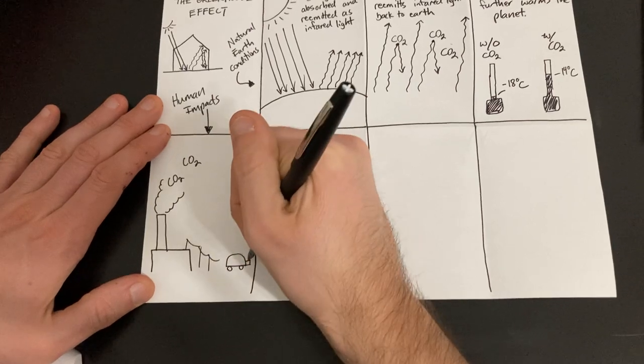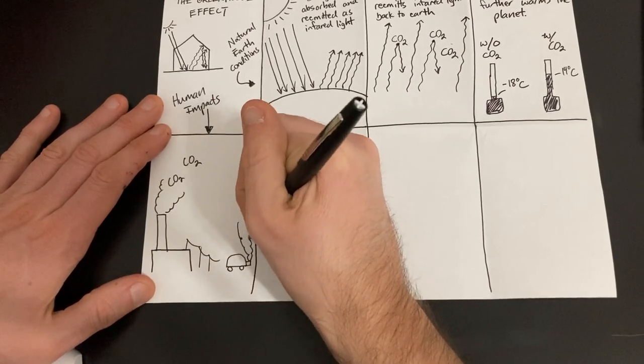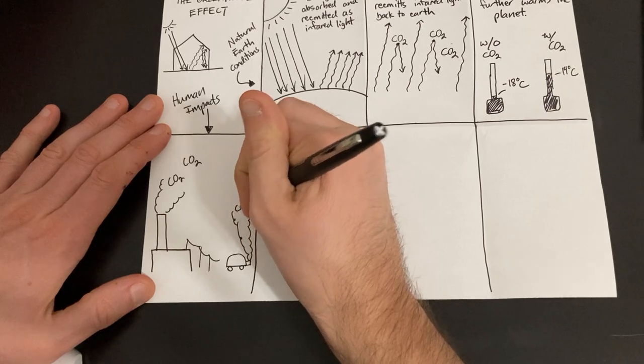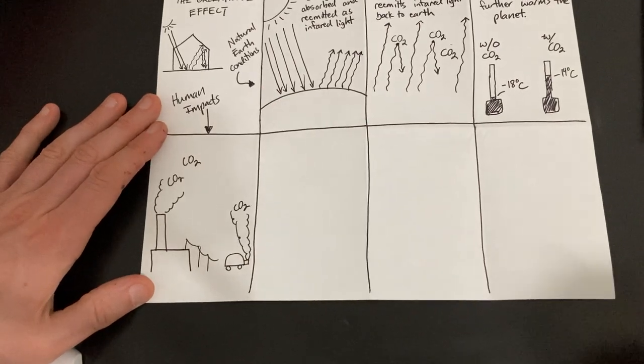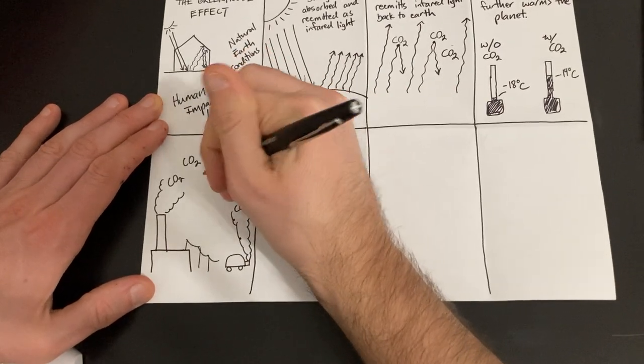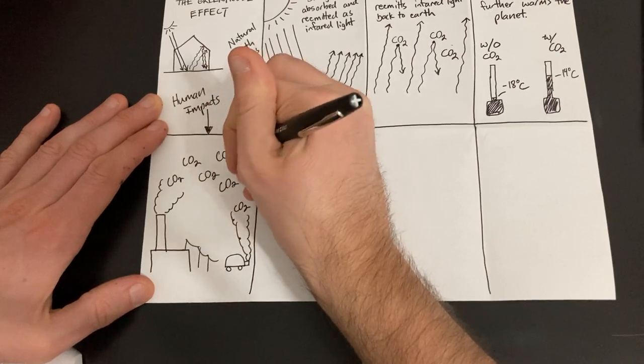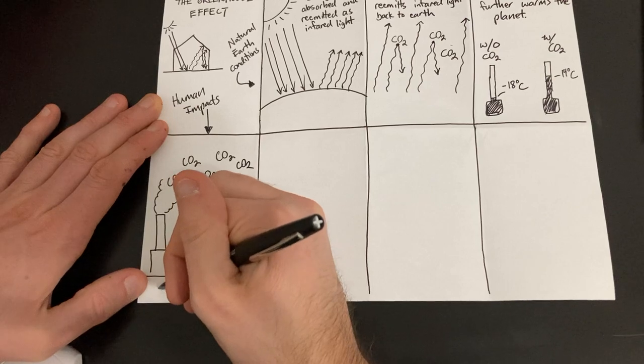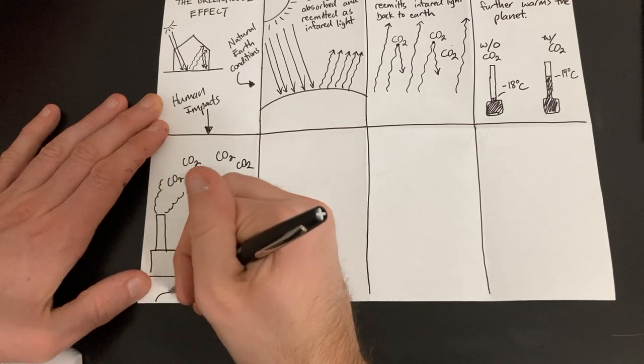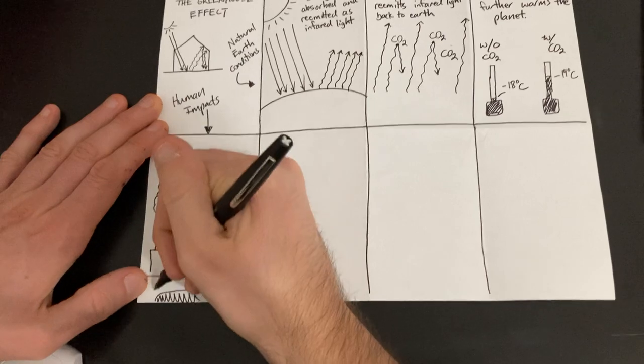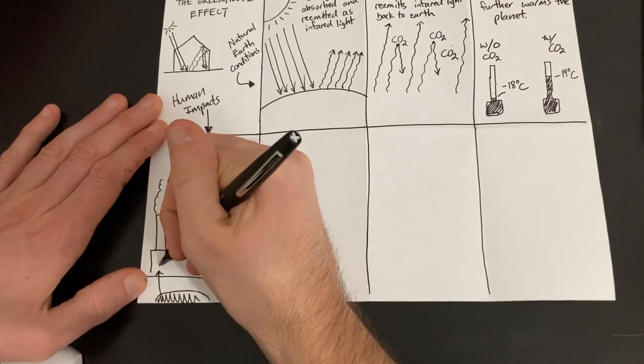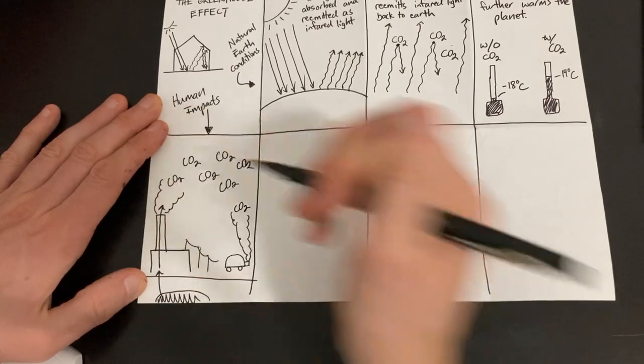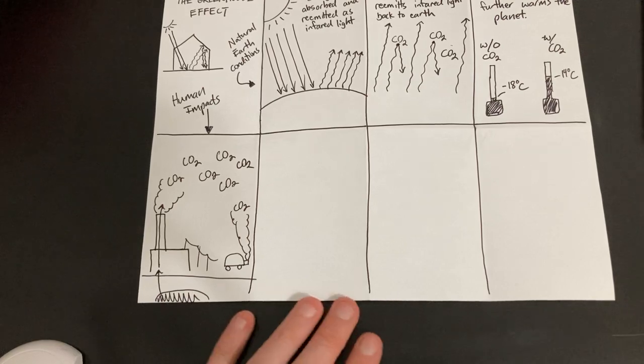But I also want to leave room to draw a car right here. Because when you burn gasoline, the exhaust from your car, part of that is also CO2 as well. So humans are putting a lot more CO2 into the environment that was previously just underground. So here the fossil fuels were originally underground. We're sucking those up, burning that fuel, and then out comes CO2 into the atmosphere.